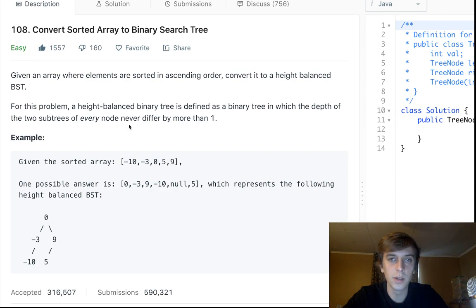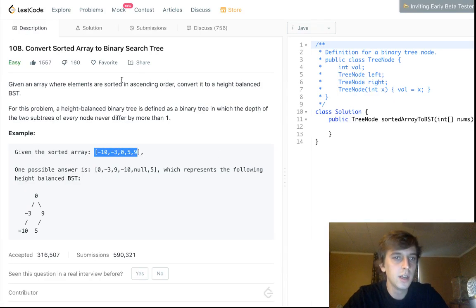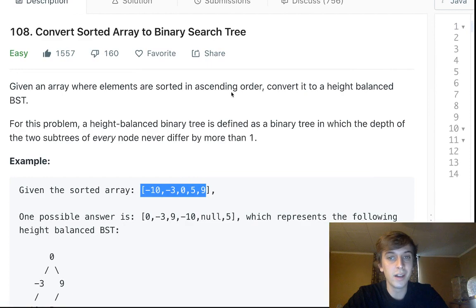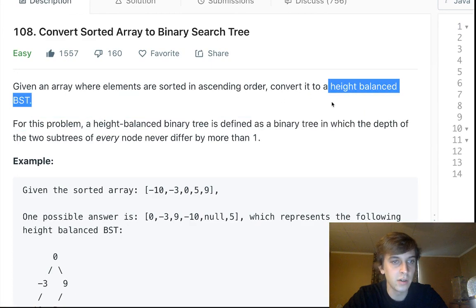So I'm guessing we're going to take an array. Given an array where elements are sorted in ascending order. So we're given an array, and the elements of the array are sorted. For example, negative 10, negative 3, 0, 5, 9, sorted array. So we want to convert it to a height-balanced binary search tree.